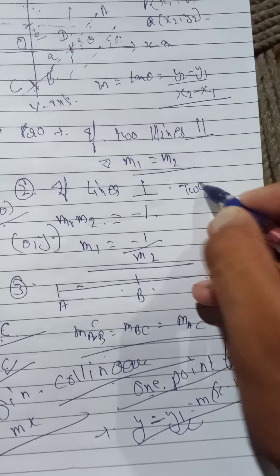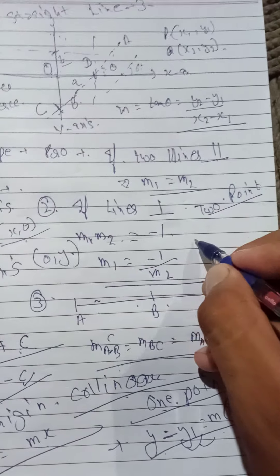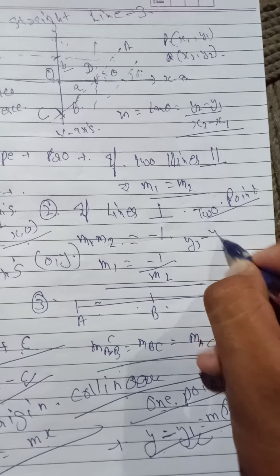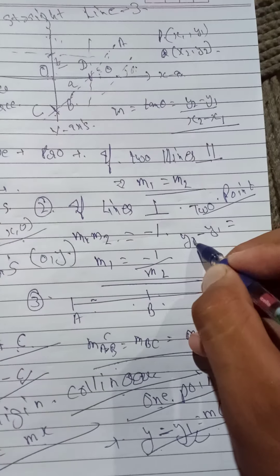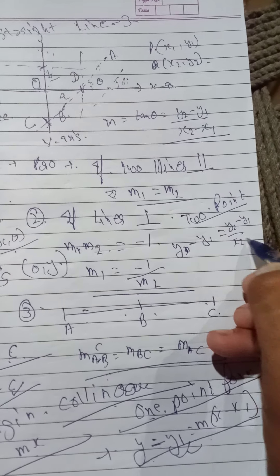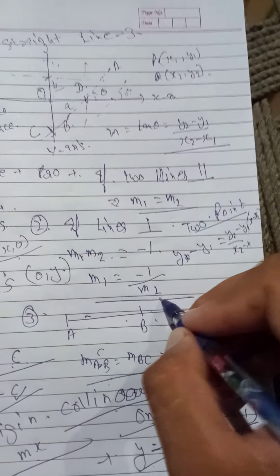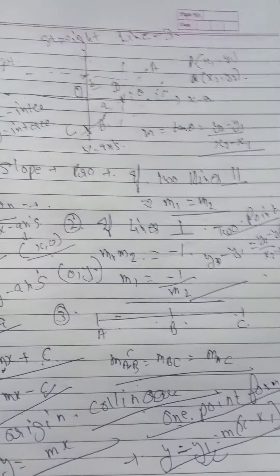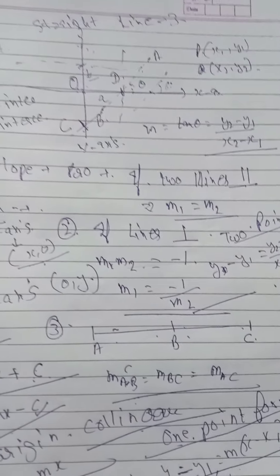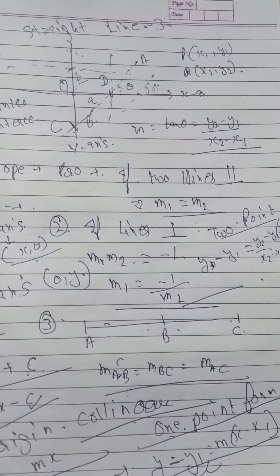Two-point form is also there in which two points are given. That is y minus y1 is equal to y2 minus y1 upon x2 minus x1 into x minus x1. This is the formula for two points. If two points on the line are given, then we can find out its equation. Thank you.